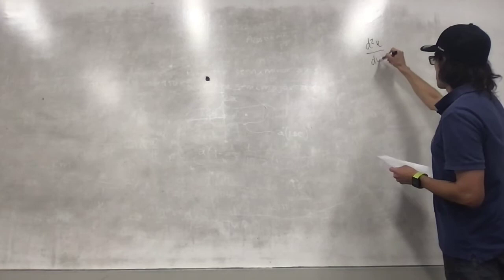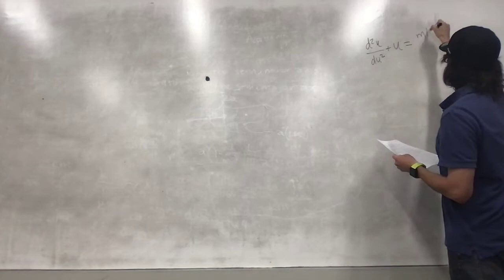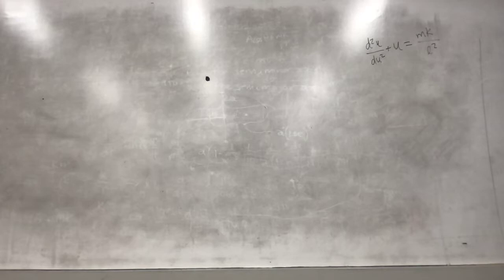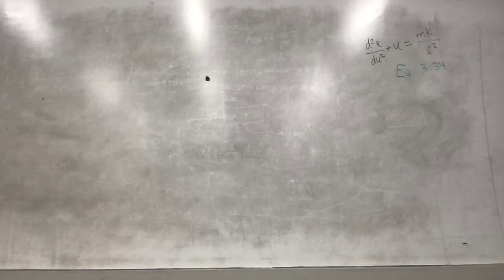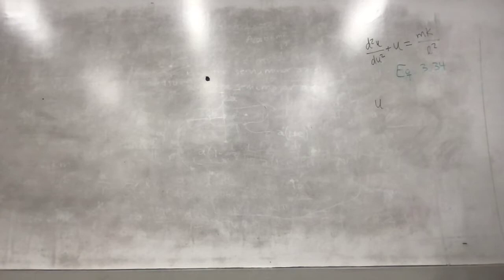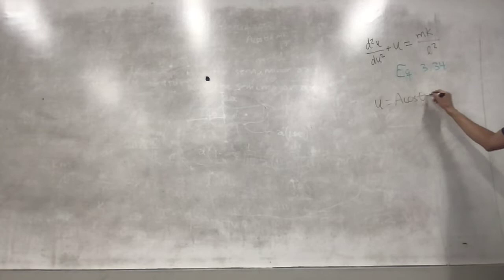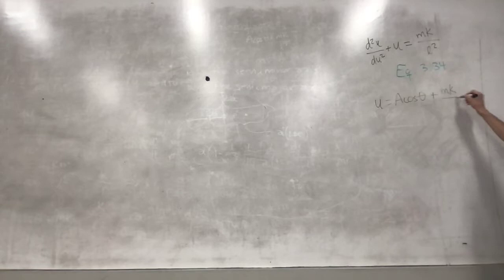Okay, it works. This time we got to this equation, this differential equation. This is equation 3.34 or similar enough in Goldstein. I didn't solve it because you can find it in pretty much every textbook. The solution is u equals A cosine theta plus a little constant.